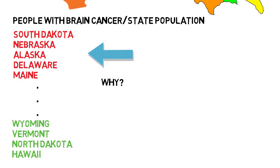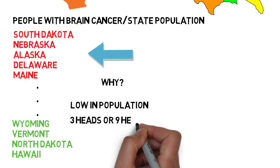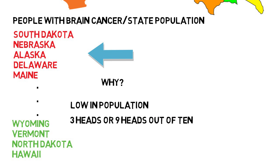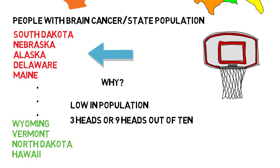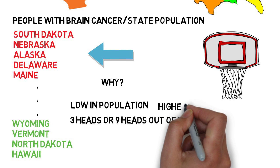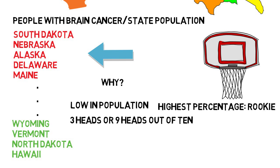If we go back to our states with high and low brain cancer concentrations, do you notice every state you see here is low in population? Just like the person who flips a coin 10 times might get 3 heads or 9 out of 10 if we experiment enough, if we look at enough states with low populations, they will be subject to much more extreme outcomes whether it be high or low. Same thing if you look at free throw stats in basketball — the highest percentage might be done by some rookie who's only shot a few free throws and got lucky.